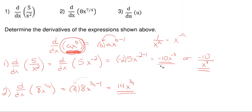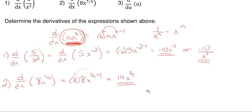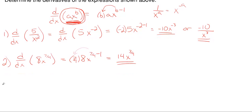Our next one is going to be the derivative of just u with respect to u. So number three, we are taking d/du of just u. There is a shorthand notation for this, and I'll show you that after we solve it the longer way — going through the same method we just applied to the first two — and then I'll show you how to do this really quickly. Essentially, we're taking the derivative with respect to u, so u is the variable we'll replace where x appears in the formula.